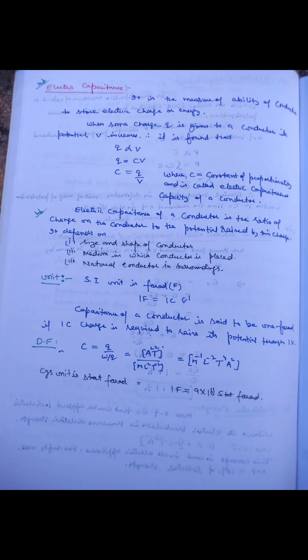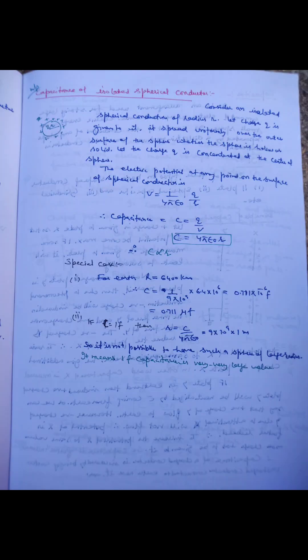The maximum electric field that can be applied to a dielectric without causing electrical breakdown is called dielectric strength. The ability of a conductor to store charge or energy is called electric capacitance. Capacitance depends upon the size and shape of the conductor, the medium in which it is placed, and the nature of surrounding conductors. It is a scalar quantity with unit farad; one farad equals one coulomb per volt. For a spherical conductor, capacitance equals 4πε₀R. The capacitance of the Earth is 0.711 millifarad.